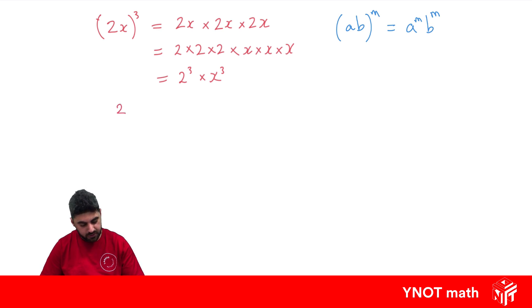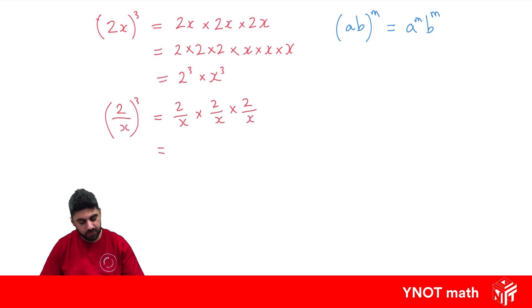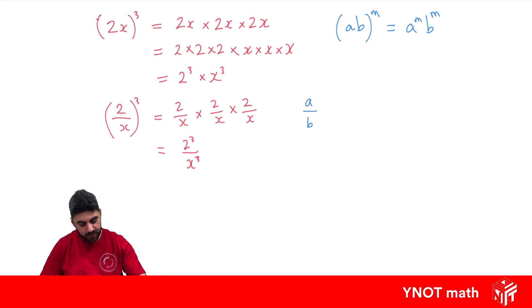Let's have a look at (2/x) to the power of 3. We could write that as (2/x) times (2/x) times (2/x). Here we're multiplying fractions, so we can multiply all our numerators together — we're going to get 2 cubed — and all our denominators together to get x cubed. Just like when we have a product to a power, when we have a division to a power, the numerator goes to that power and the denominator goes to that power. We can generalize it by saying (a/b) to the power of m equals a to the power of m over b to the power of m.